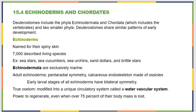Section 15.5 covers echinoderms and chordates, both of which are deuterostomes — the anus forms first. Echinoderms are named for their spiny skin, with about 7,000 living species: sea stars, sea cucumbers, urchins, sand dollars, and brittle stars. They're all exclusively marine. As adults they have pentaradial symmetry, but as larvae they are bilaterally symmetrical — which is why they still fit within the bilateral classification. A neat feature is their water vascular system, using water that comes in through the madreporite and out through tube feet to exchange nutrients, gases, and waste. Echinoderms also have the ability to regenerate their body mass even if over 75% of it is lost.